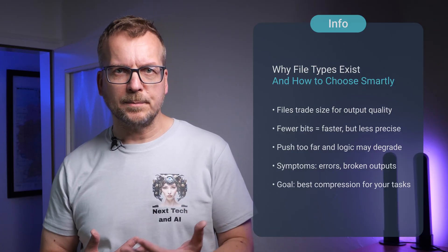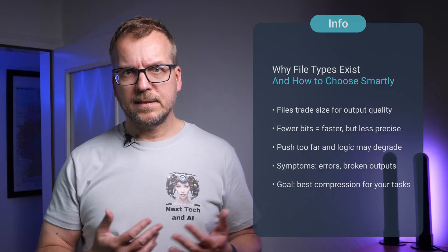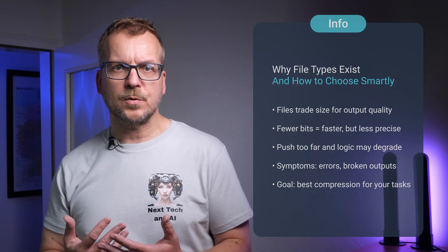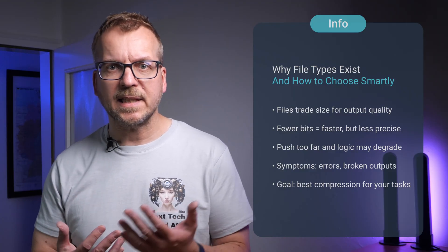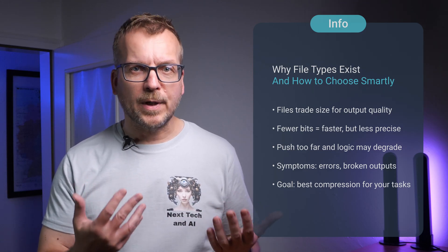By the end of this video you'll know which file to download for your setup and use case. We'll keep it practical: a simple format map, a memory ladder you can feel in real tasks, and a file tab decoder that turns alphabet soup into a single confident click. Open models ship in multiple formats and quant levels because you trade memory for fidelity. Fewer bits per weight means smaller files and faster loads. Push it too far and you'll feel it — first as subtle reasoning slips or messy JSON, then as broken chains and brittle code. Our goal is not theory; it's choosing the right compression level for what you actually do.